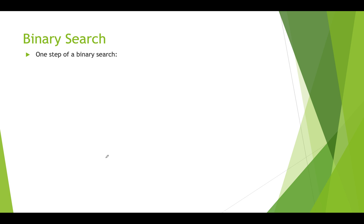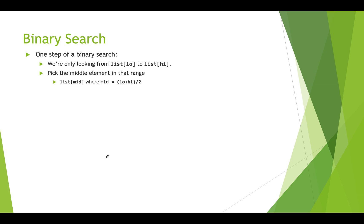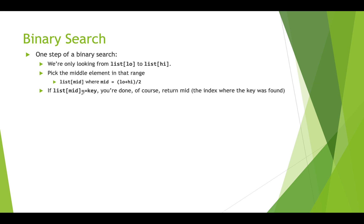Let's look at one step of a binary search. We're only looking at the part of the array from list low to list high, and we pick the middle element in that range. We calculate mid as low plus high divided by two, giving us the index halfway between low and high. Then we look at the element at that index and ask: is it the same as the key? If it is, we found what we're looking for and return mid, which is the index where the key was found.